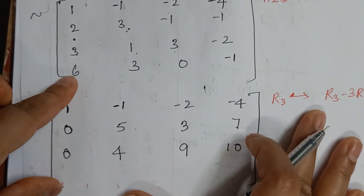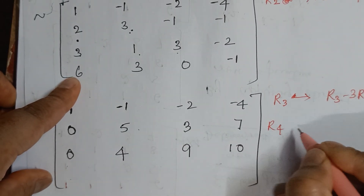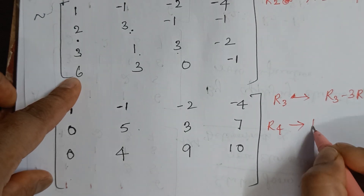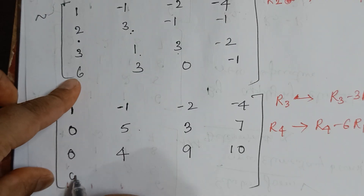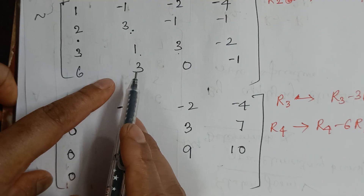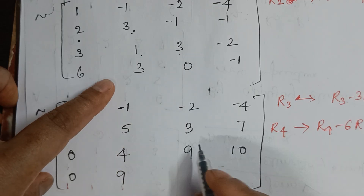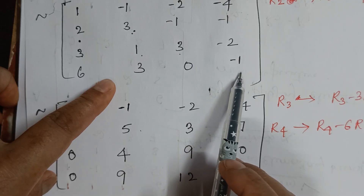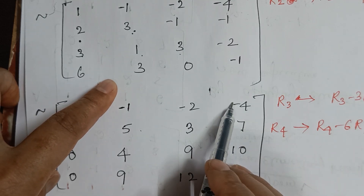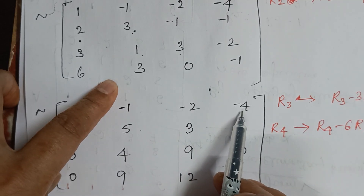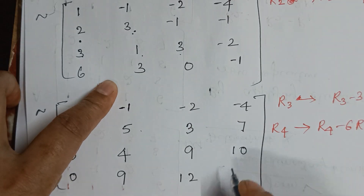Now for row 4, I'll perform R4 → R4 - 6R1. So: 6 - 6(1) = 0, 3 - 6(-1) = 9, 0 - 6(-2) = 12, -1 - 6(-4) = -1 + 24 = 23. Row 4 becomes: 0, 9, 12, 23.